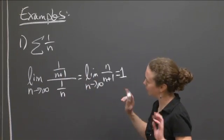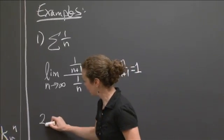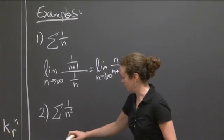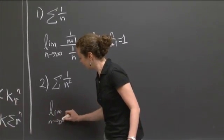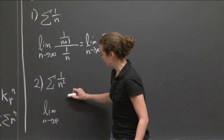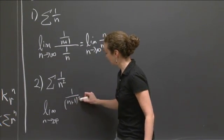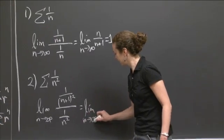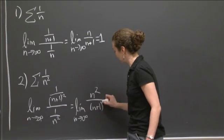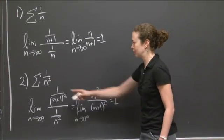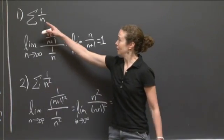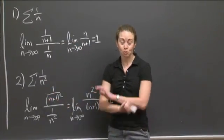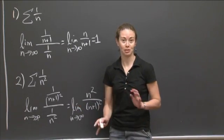We know 1/n diverges, so we might think when L equals 1 we know it diverges. But just to make sure we don't draw that conclusion, let's look at 1 over n squared. The limit as n goes to infinity: the n plus first term is 1 over (n+1) squared, and the nth term is 1 over n squared, giving the limit of n squared over (n+1) squared, which also equals 1. But we know this one converges. So 1/n gave L=1 and diverges; 1/n² gave L=1 and converges — we really cannot conclude convergence or divergence when L equals 1.